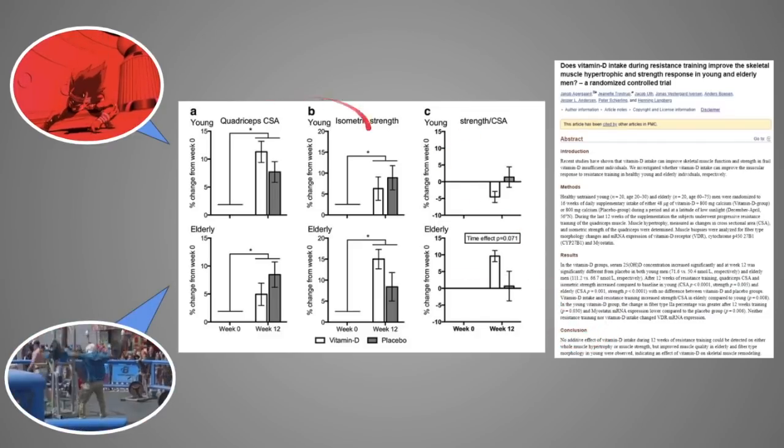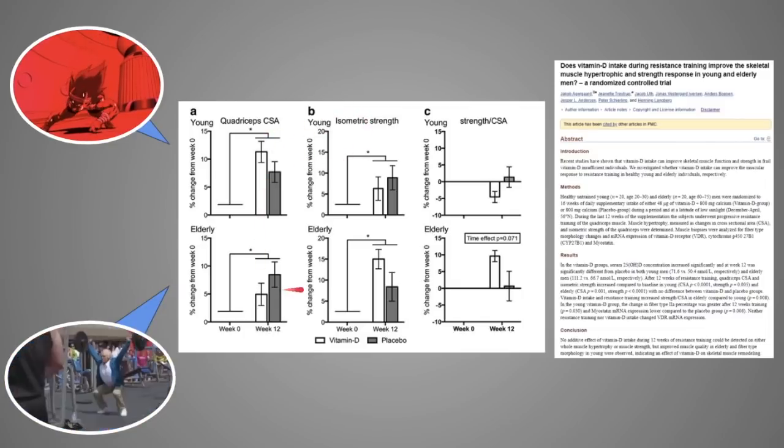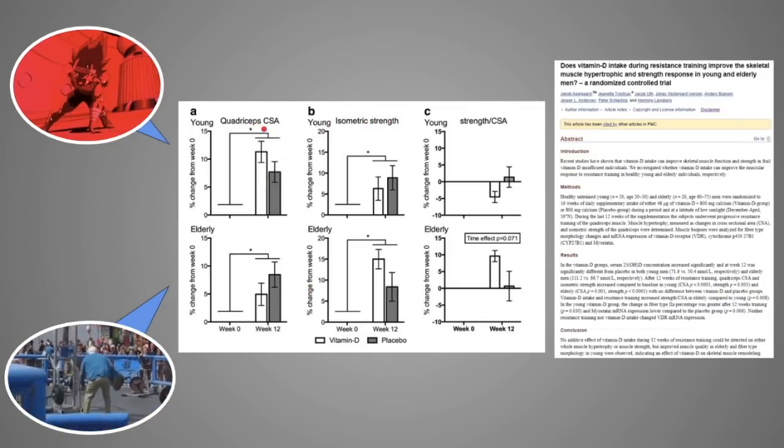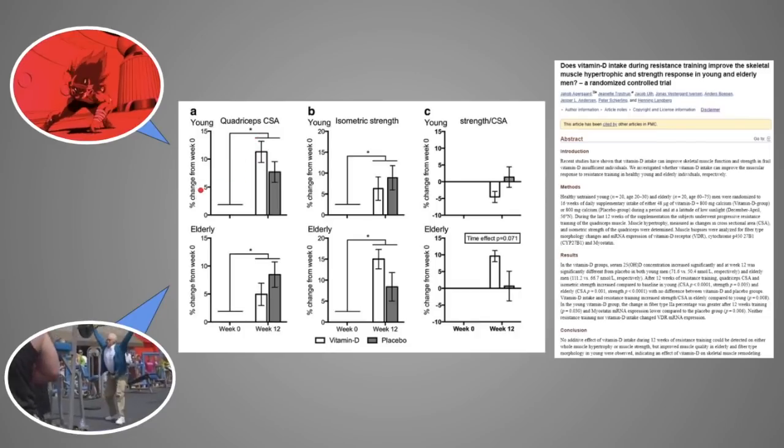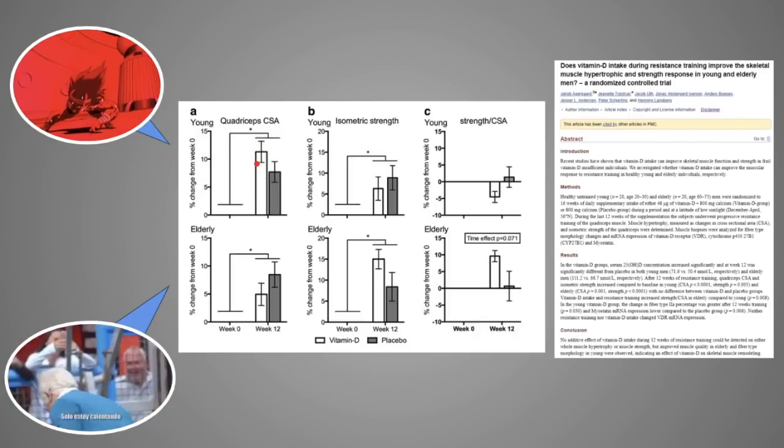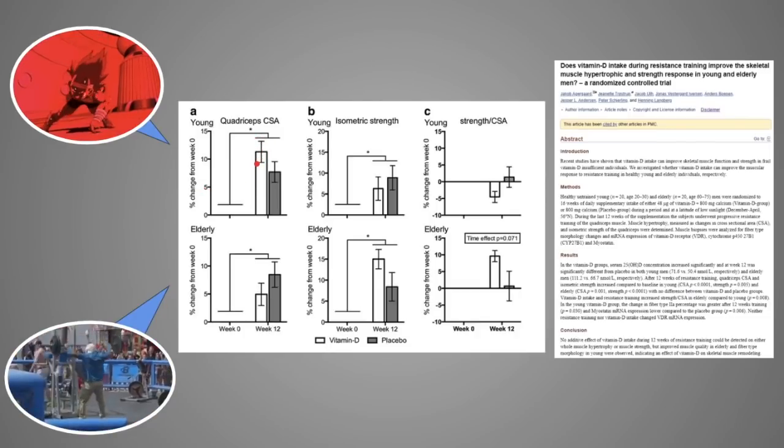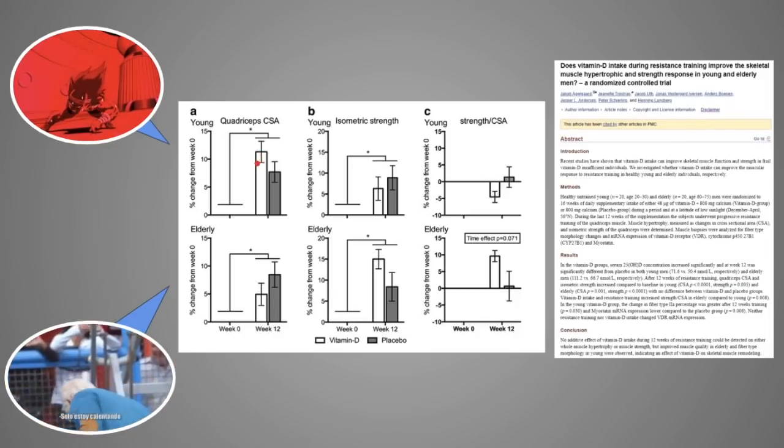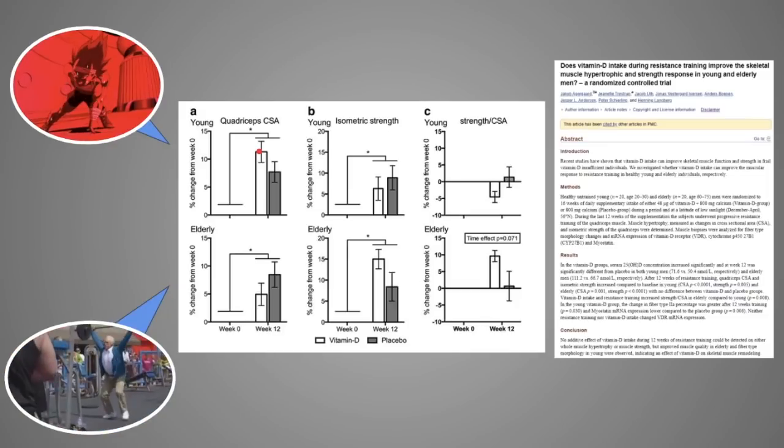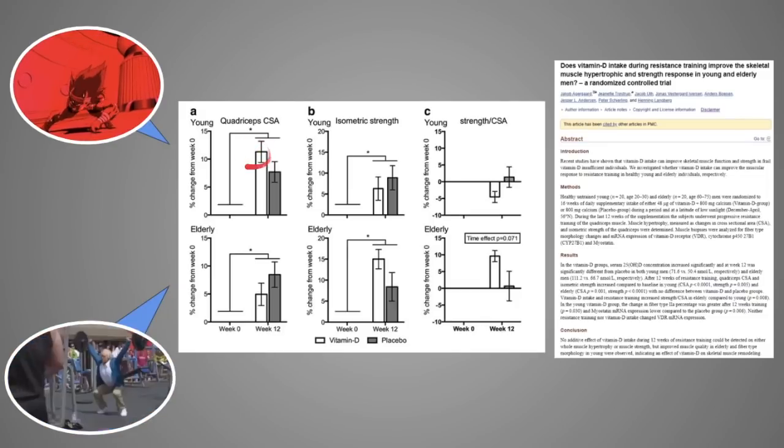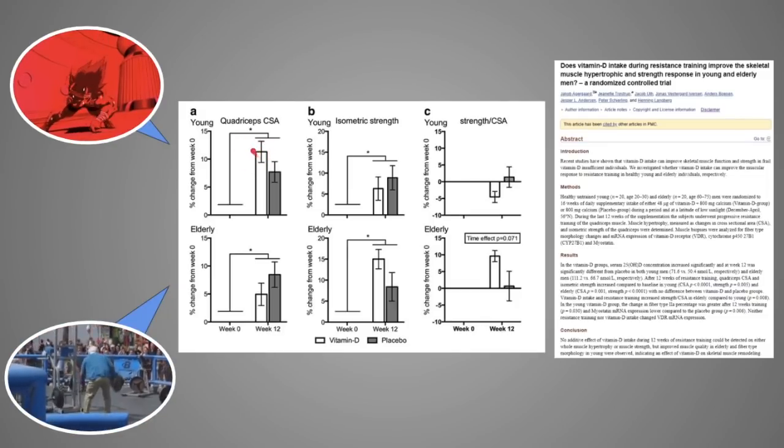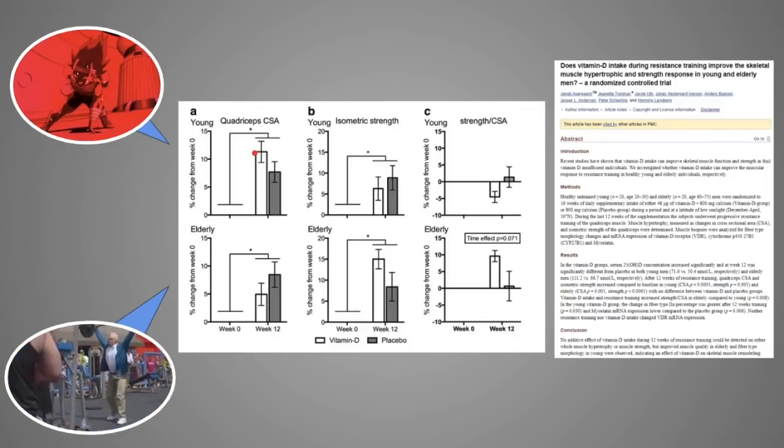Long story short, the young group is at the top, the old group is at the bottom, and let's focus on TSA, which is pretty much hypertrophy. As you can see, the white bar is the group that took vitamin D. Keep in mind, it did not take enough vitamin D. It was actually a very pussy dose, but it was enough to see bigger changes in hypertrophy compared to the placebo group. It wasn't statistically significant, but as you can clearly see, it was enough to raise an eyebrow.